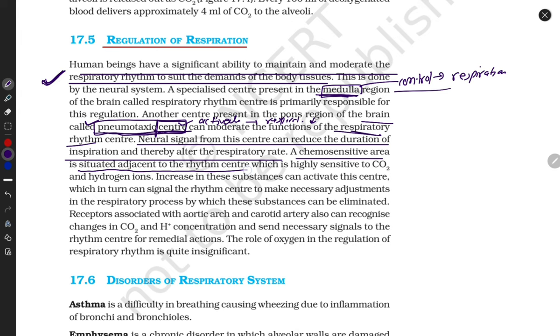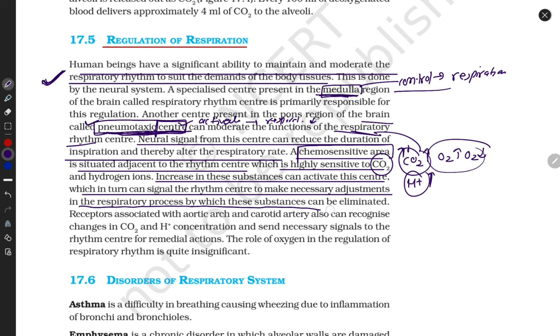Another one is a chemosensitive area situated adjacent to the rhythm center. This area is located near the pneumotoxic center, which is highly sensitive to CO2. When CO2 is high, they give signals to the pneumotoxic center. When oxygen is low, they give signals. When CO2 is high and H+ is high in both tissues, they signal the pneumotoxic center to take inhalation, take some oxygen, because lots of CO2 is collected. Increases in these substances can activate the center, which in turn can signal the rhythm center to make necessary adjustments in the respiratory process.